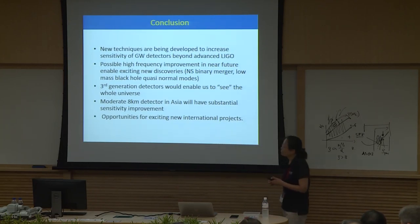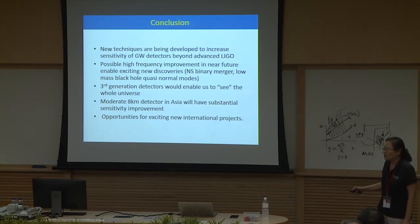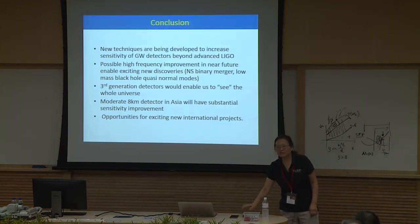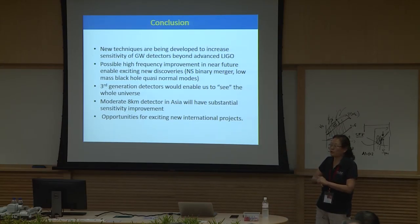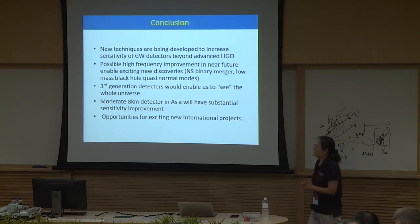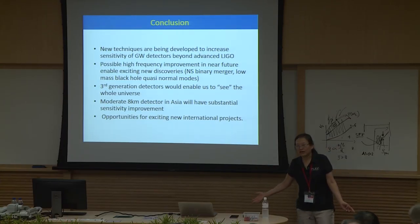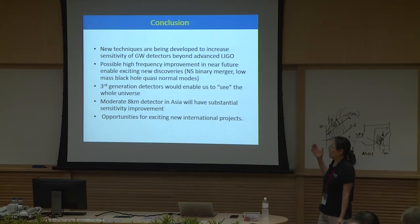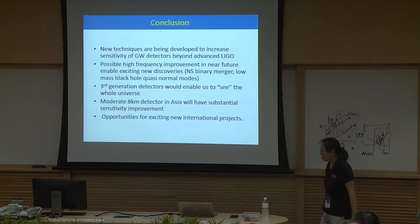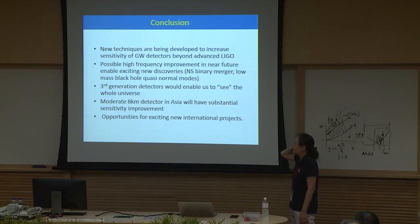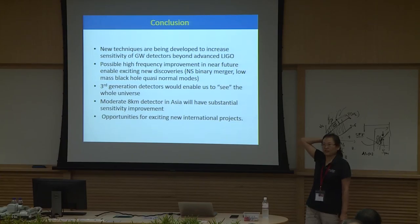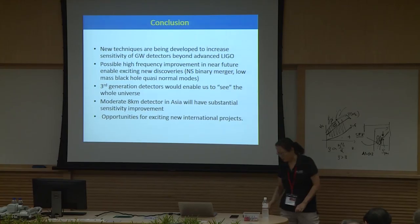In conclusion, we are working very hard on many technologies to improve and implement sensitivity enhancements for advanced LIGO and beyond. Third-generation detectors could let us see the whole universe. Our proposed moderate 8-kilometer detector in Western Australia would provide substantial sensitivity improvement, and there are lots of opportunities for great collaboration. Thank you.